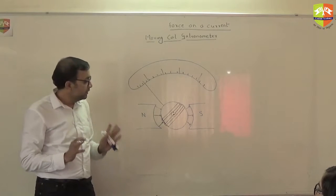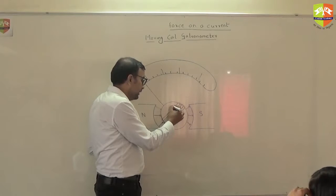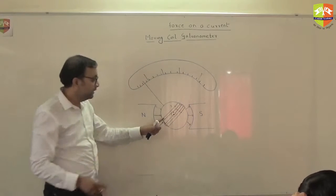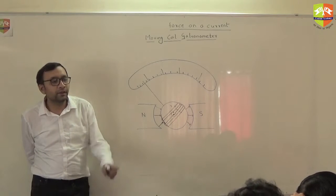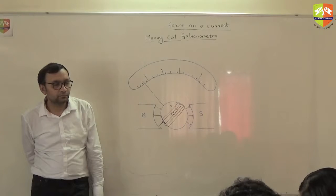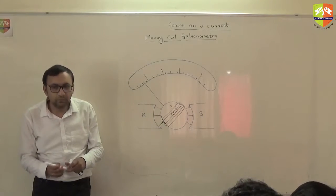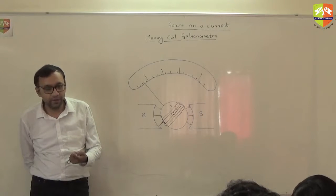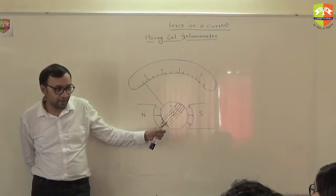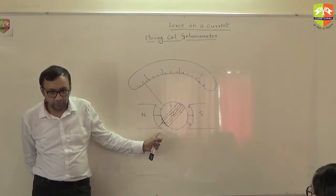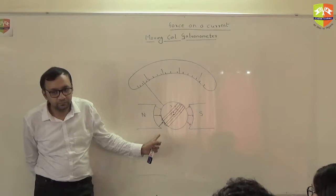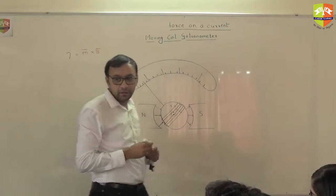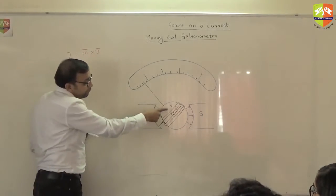Now if I pass some current in this coil, will it have any magnetic moment? Yes, it has a magnetic moment, and it is kept in a magnetic field. So will it have a torque? The torque is M cross B. So if I put a current in this coil, this entire drum will rotate.